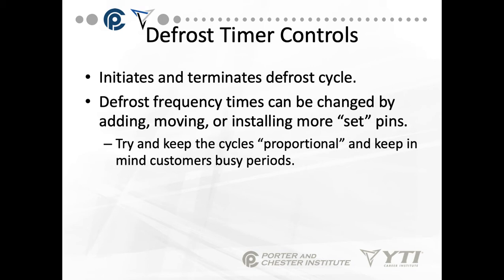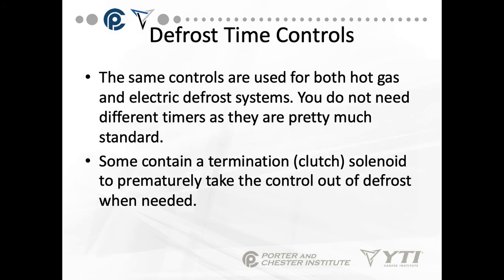The goal is to try to keep the cycles proportional — the same amount of time between the hours — and we want to keep in mind the customer's busy periods. For example, if we know that a restaurant kitchen is extremely busy between 3 p.m. and 11 p.m. and that refrigerator or freezer door is always opening and closing, we do not want to send our defrost during that time period.